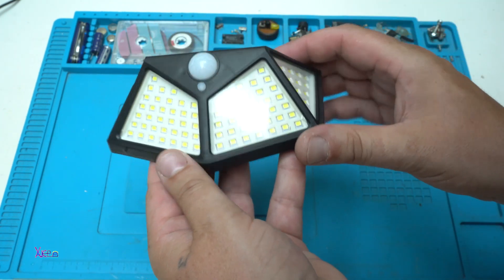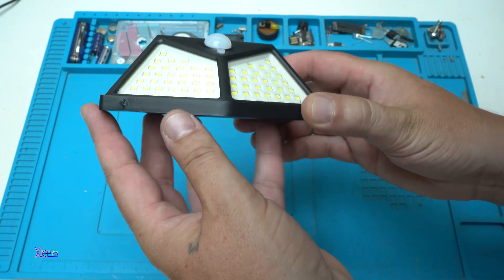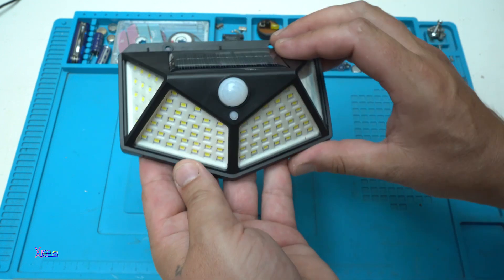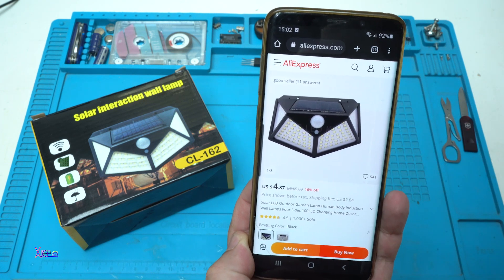100 LED wall mount light with built-in battery and a couple of functions. Let's test it. For around five dollars from AliExpress you can get this light.